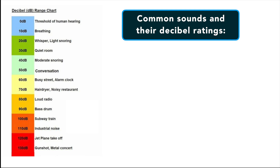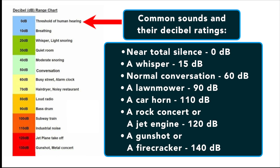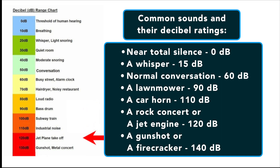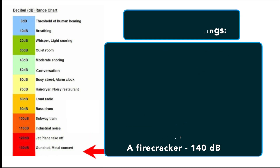Here are some common sounds and their decibel ratings. Near total silence — the rubbing of your fingers against one another close to your ear — is 0 dB. A whisper is 15 dB. Normal conversation, like I'm speaking now, is 60 dB. Your lawnmower is about 90 dB. A car horn is 110 dB. A rock concert or a jet engine is 120 dB. A gunshot or firecracker is about 140 decibels.